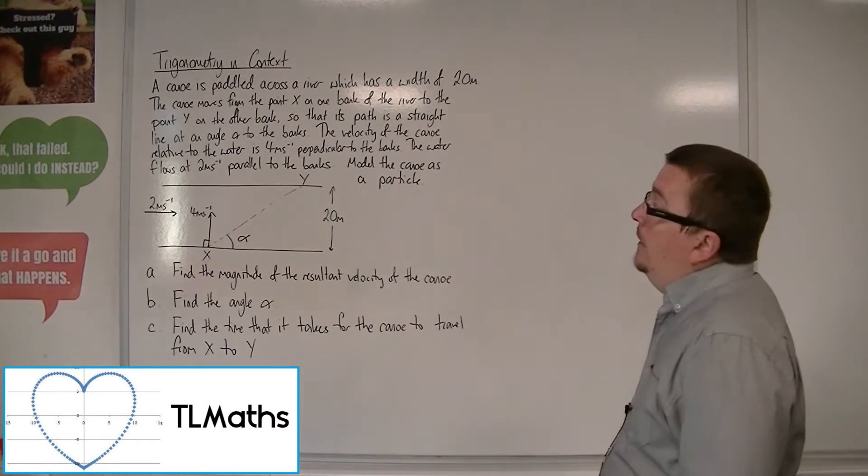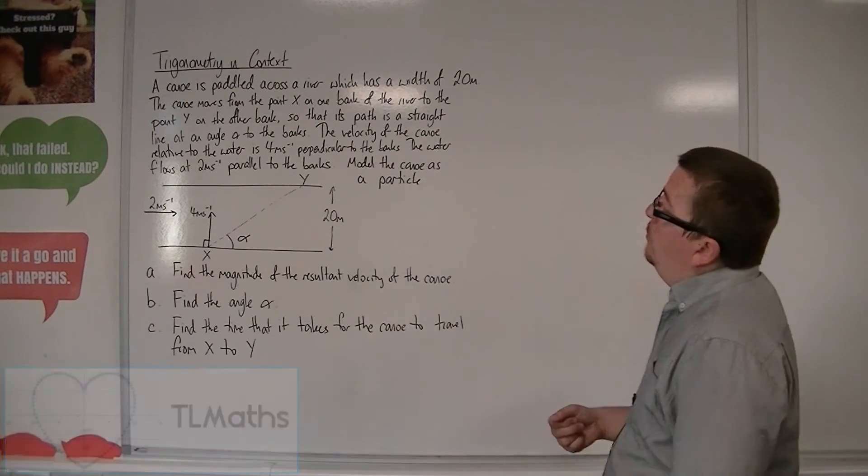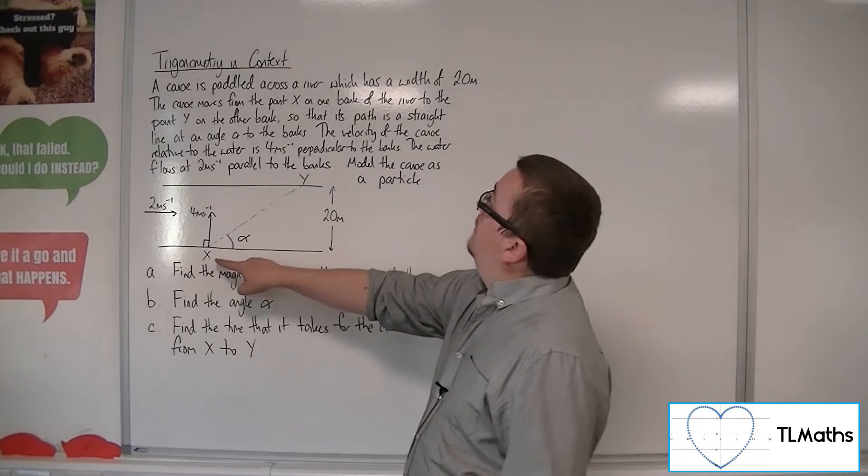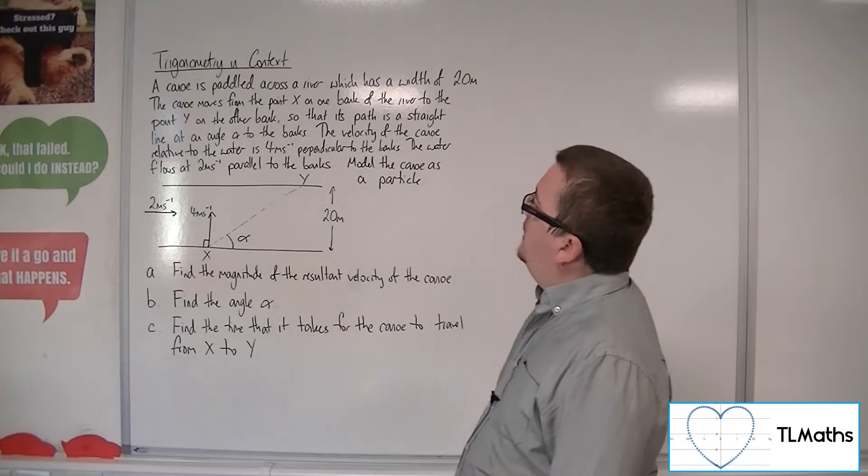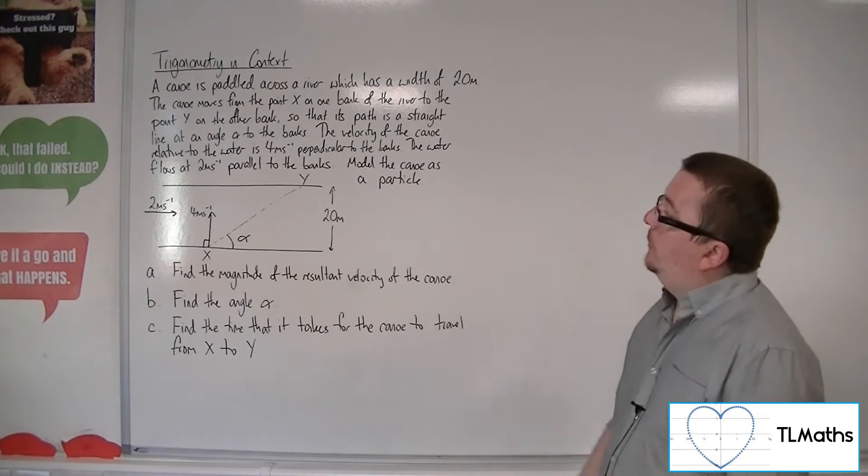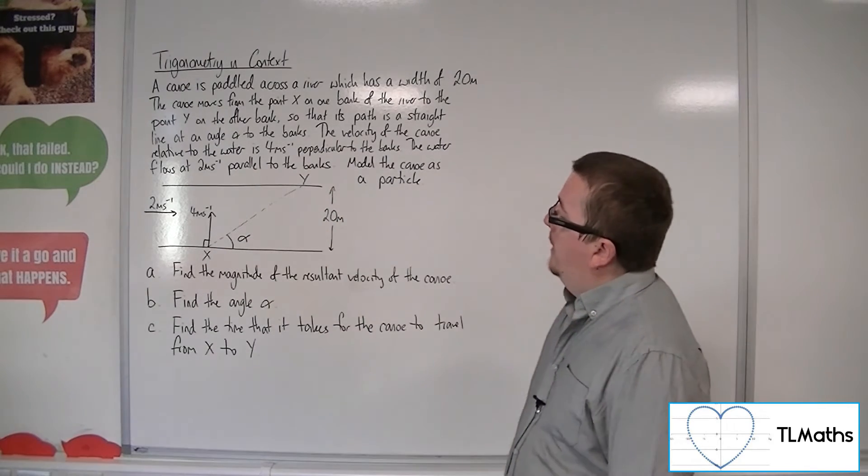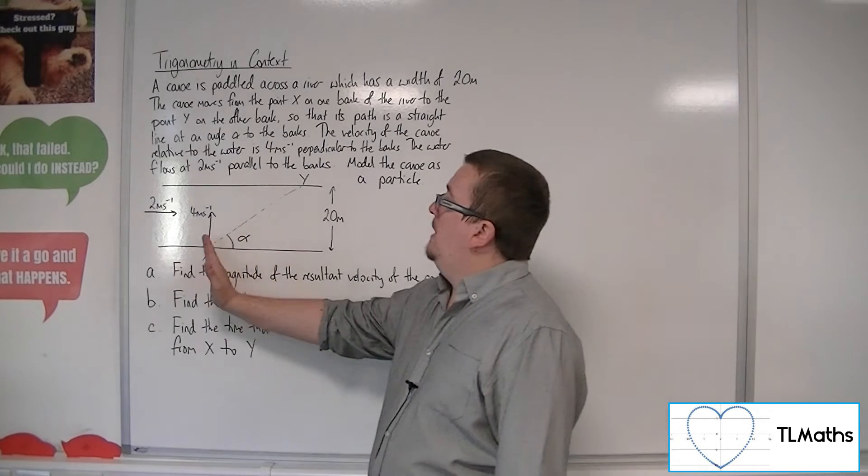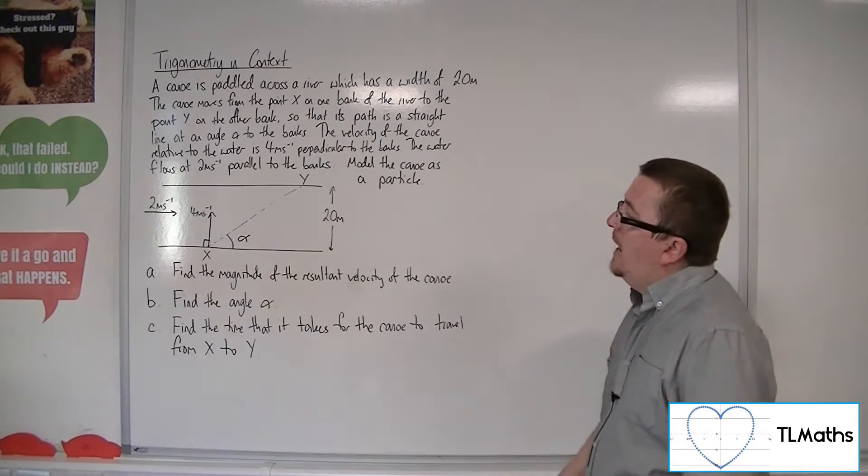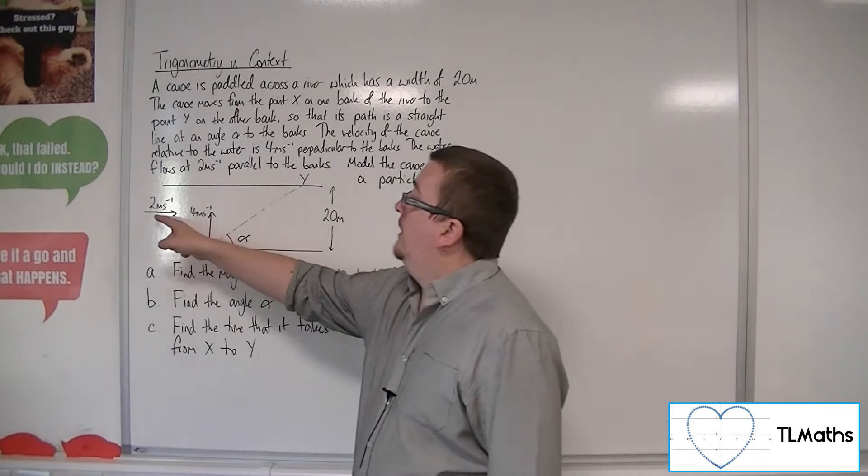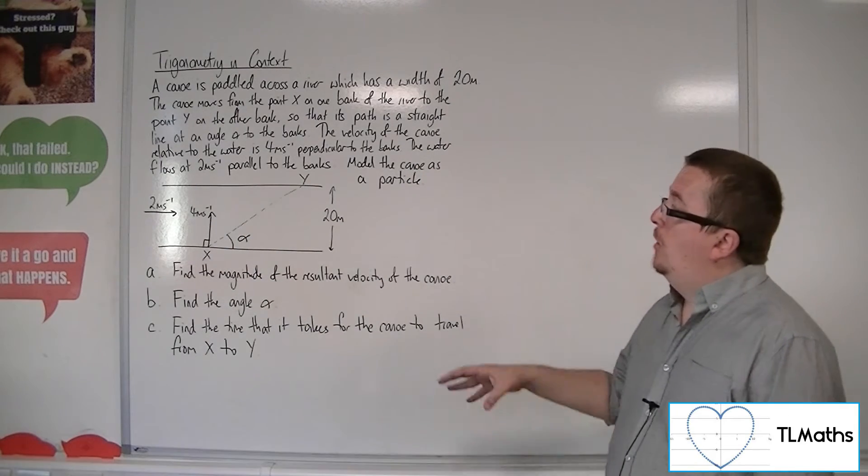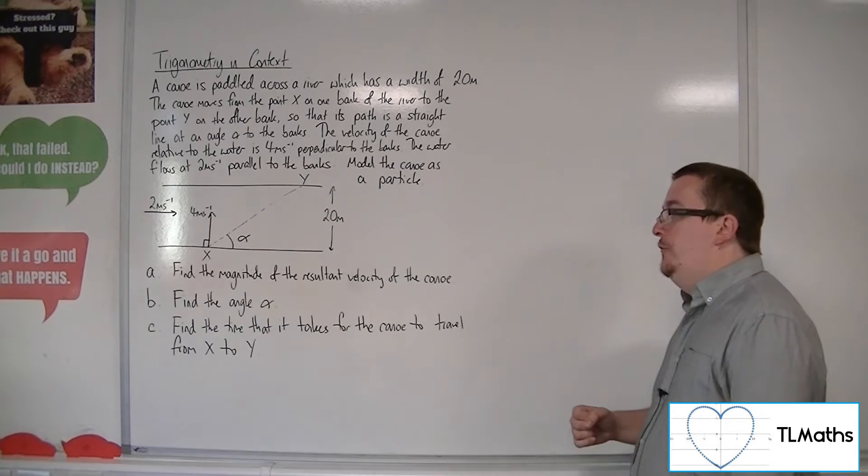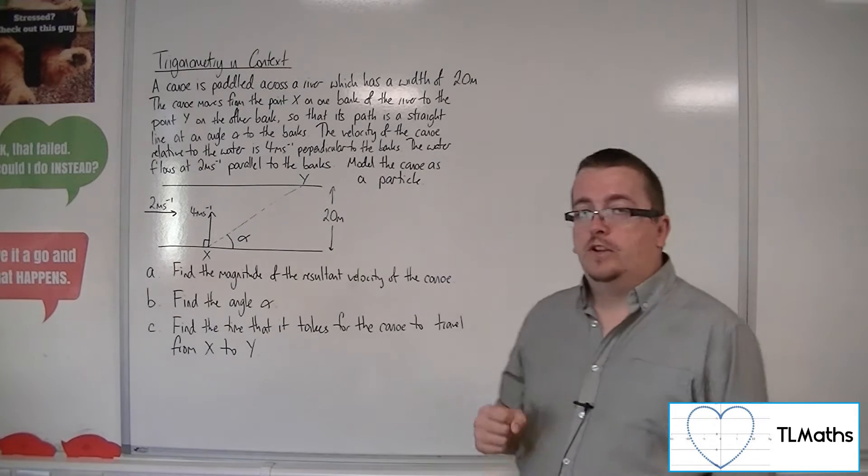In this problem we have a canoe that's paddled across a river which has a width of 20 meters. The canoe moves from point X on one bank of the river to point Y on the other bank, so that its path is a straight line at an angle of alpha to the banks. The velocity of the canoe relative to the water is 4 meters per second perpendicular to the banks, and the water flows at 2 meters per second parallel to the banks. We're going to model the canoe as a particle, and we first of all want to find the magnitude of the resultant velocity of the canoe.